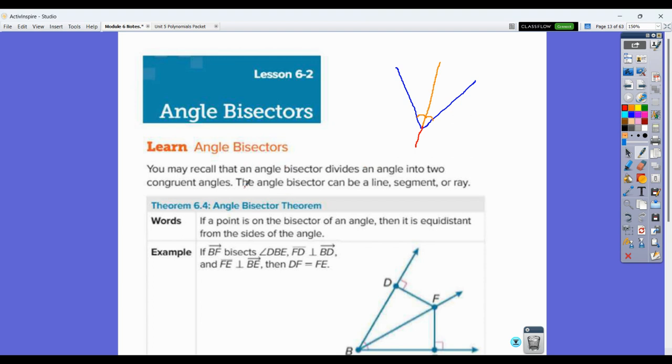So the angle bisector theorem, we're going to use these to solve problems, not to do proofs. It says if a point is on the bisector of an angle, then it is equidistant from the sides of the angle. So essentially if I take any point on that angle bisector right here, it's equidistant to the sides.